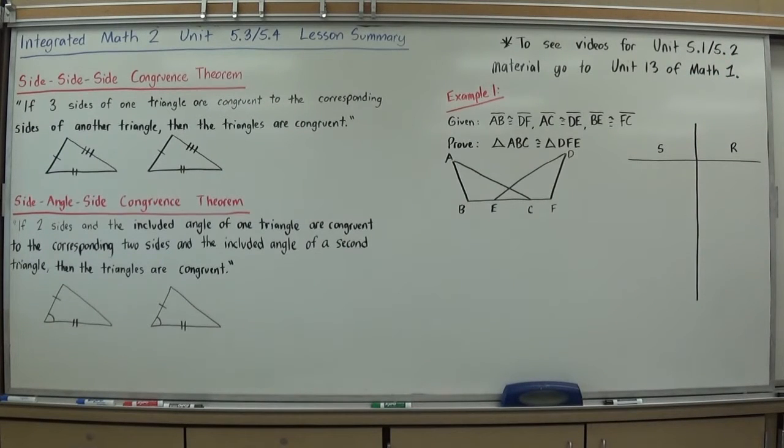This entire chapter really is a review of some concepts you did in Math 1. So if you need help with Unit 5.1 and 5.2, you want to look at the Math 1 videos that we have online, look at Unit 13. It's kind of scattered throughout that, but if you look at the first few sections there, it should help you. It's writing congruence statements and initially exposing you to some different theorems for proving triangles are congruent.